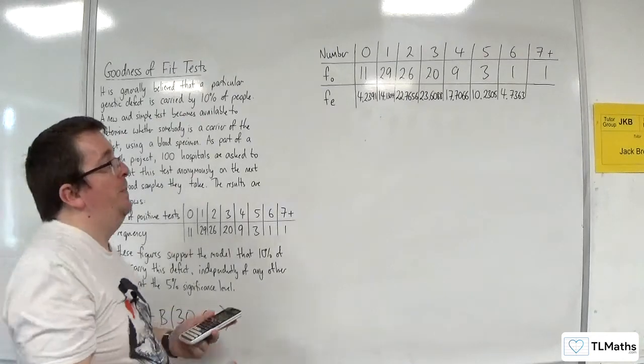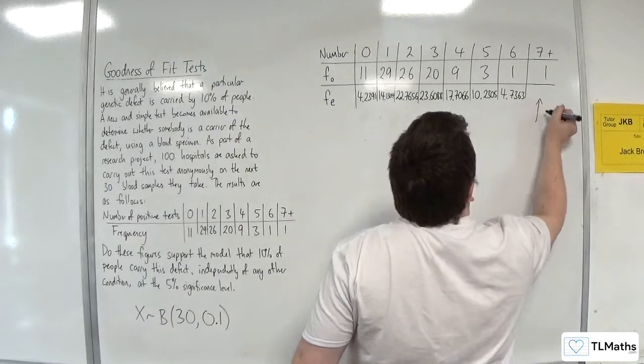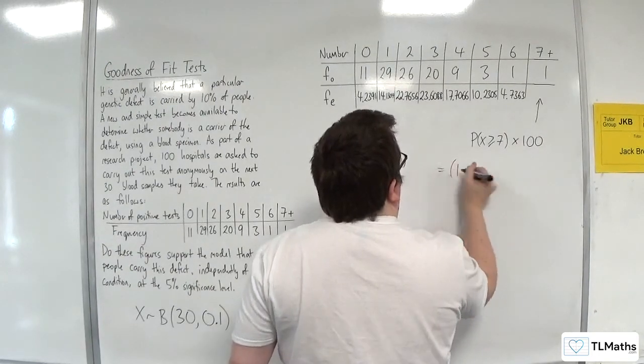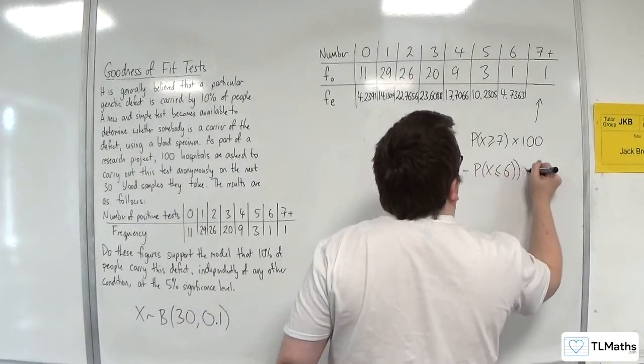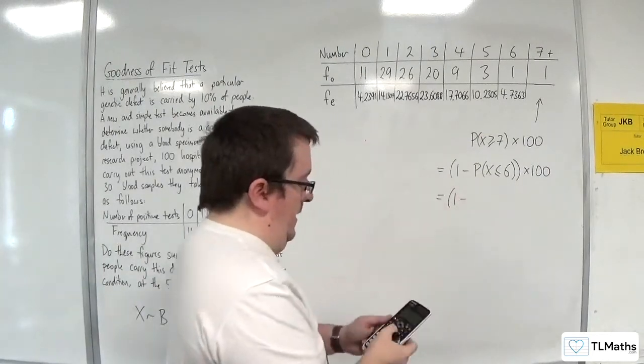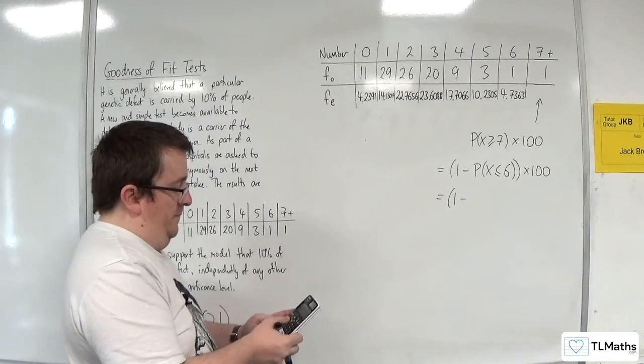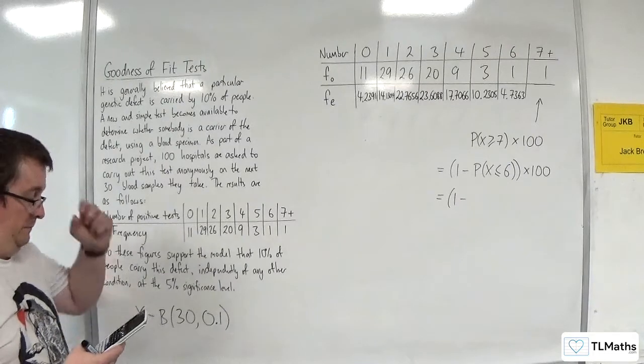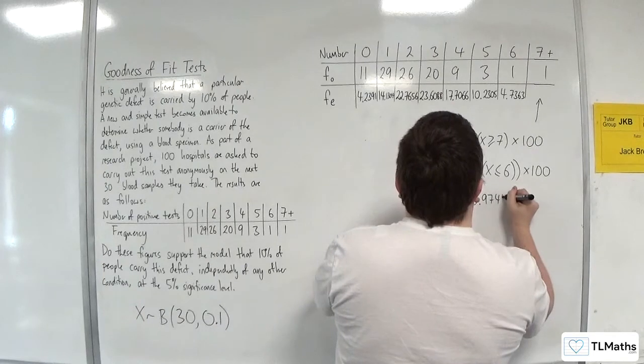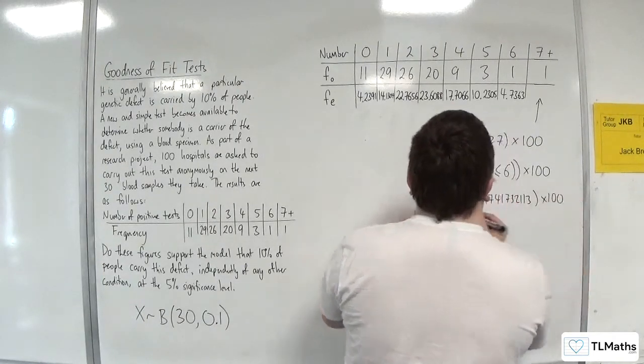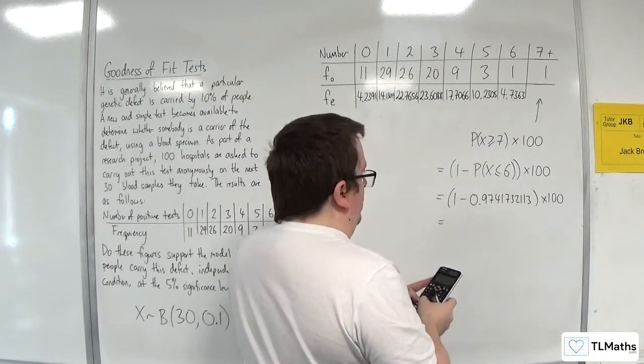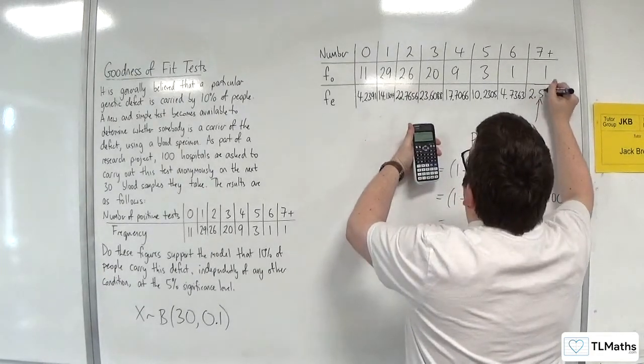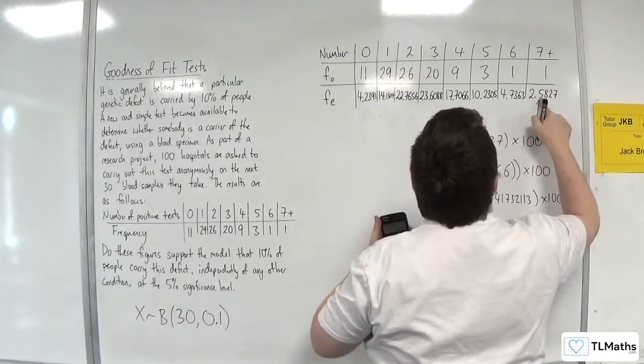Now the next one is 7 plus. So we need to find the probability of x being greater than or equal to 7. So I need probability of x being greater than or equal to 7 and I need times that by 100. Because I'm using the Classwiz I'm going to have to do one take away the probability of x being less than or equal to 6. So menu number 7, I need binomial cd. We'll change the x value to 6, n is 30, p is 0.1. So that's 0.9741732113. So 1 take away 0.9741732113 times by 100 and we get 2.58272.